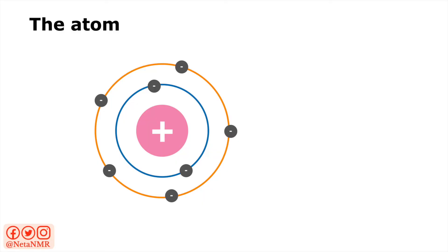So now let's get back to those electrons. They are organized on different shells surrounding the nucleus, represented here by the blue circle and the orange circle. The shells closer to the nucleus have a lower energy than the ones further away. The lower energy shells get populated first, and when they are filled with the maximum number of electrons allowed, then the outer shells get populated.